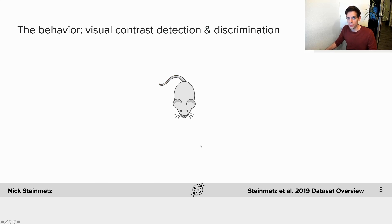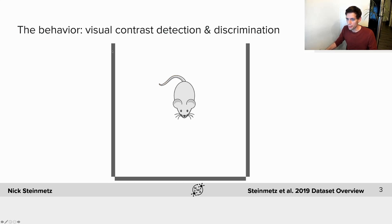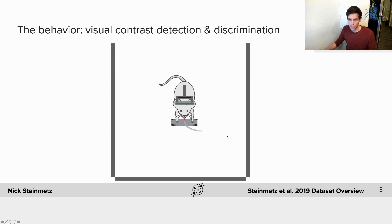The behavioral task that the mice performed involved three computer screens surrounding the mouse. The mice had a wheel they could turn left and right with their forepaws, and a lick spout to deliver rewards for correct answers. The mice were head-fixed in the center of these three screens so that we could precisely control the visual stimulus and combine this task with the Neuropixels recordings.